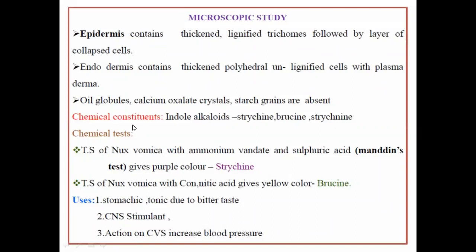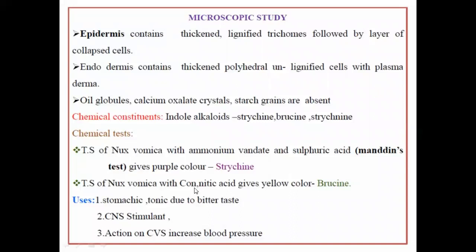Let's discuss the chemical constituents and why Nux vomica is useful for natural pesticides. It is an alkaloidal-containing drug. The main constituents are indole alkaloids — specifically strychnine and brucine. For the identification test: the transverse section (TS) of Nux vomica treated with ammonium vanadate and sulfuric acid (Mandelin's test) gives a purple color, indicating the presence of strychnine. The TS treated with concentrated nitric acid gives a yellow color, indicating the presence of brucine.